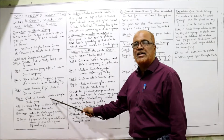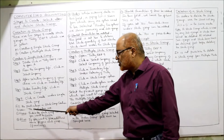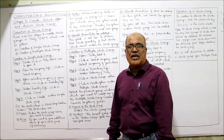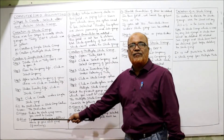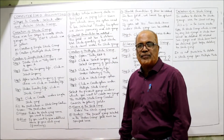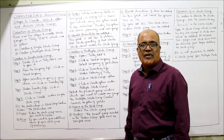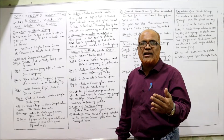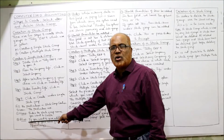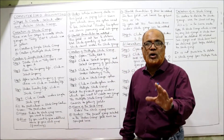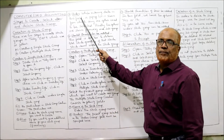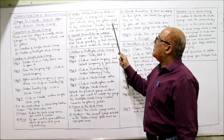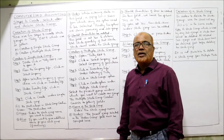Then fill in the particulars in the Stock Group Creation screen. The fields required are: first, Name — it asks you to enter the name of the group you want to create. Second, Alias — if you want to give an additional name to your stock group, it is optional. Third, Under — in this field, when you enter data, a pop-up list is shown from which you need to select an option.